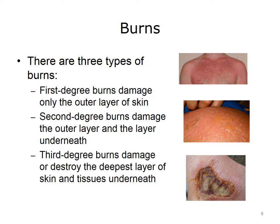Third degree burns damage or destroy the deepest layer of skin and tissues underneath. These burns are also called full thickness burns, since they involve all three layers of skin — epidermis, dermis, and fat layer. Usually, the sweat glands, hair follicles, and nerve endings are destroyed as well. Third degree burns are not painful because the nerves have been destroyed. The skin becomes leathery and may be white, black, or bright red. The burned area does not blanch when touched, and hair can easily be pulled from the roots without pain.